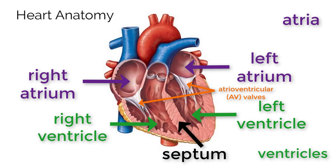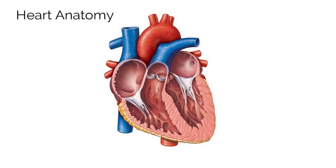The atria and ventricles are separated by valves called atrioventricular valves — easy to remember because the words atria and ventricle are used in naming the valve. Additionally, there are two more valves called semilunar valves located between the ventricles and the major arteries. To be more specific, one is called the pulmonary valve and the other is called the aortic valve; either way, they are both semilunar valves.